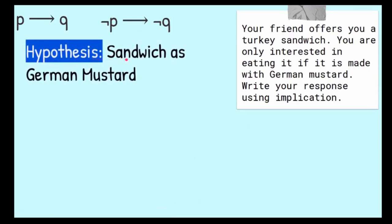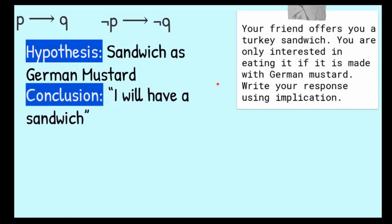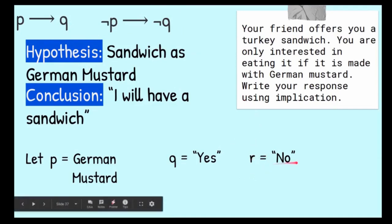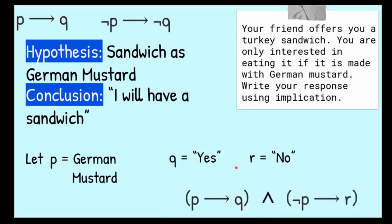The hypothesis is sandwich has German mustard. The conclusion is I will have a sandwich. Because our assignment here was to write our response. So it's not actually eating it. It's responding to your friend. I will have the sandwich. So let's let p equal German mustard. Let q equal yes. And we're going to let r equal no. We're going to give a separate variable to not q. So q is yes, not q, we're going to call r and give the response no. If p, then q. And if not p, then r.